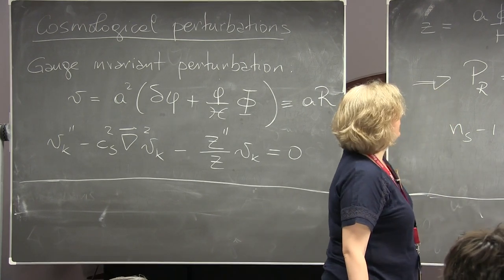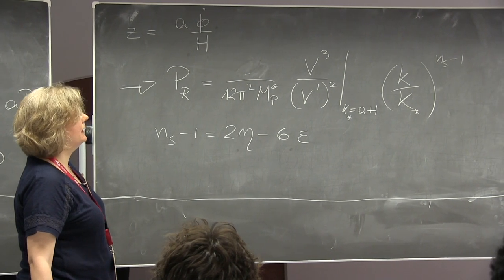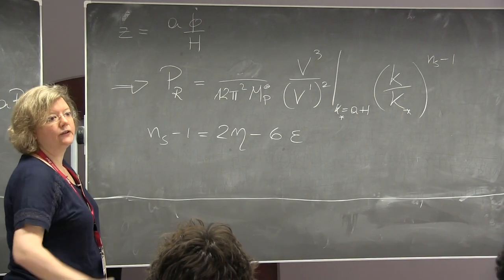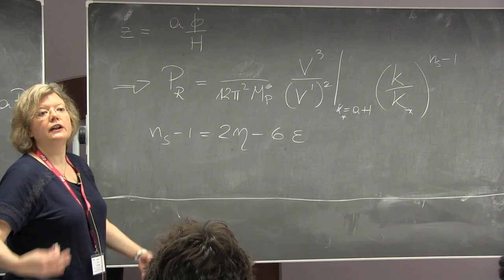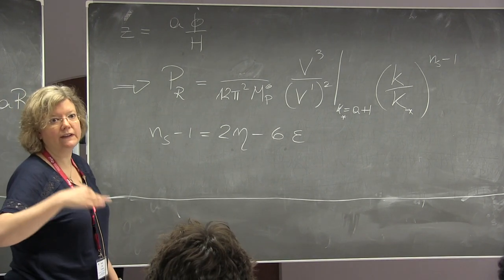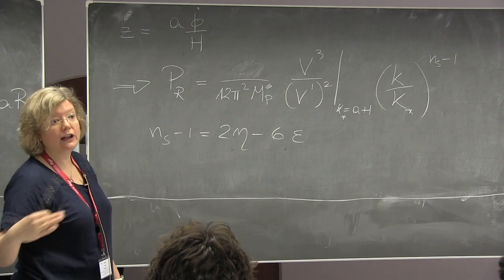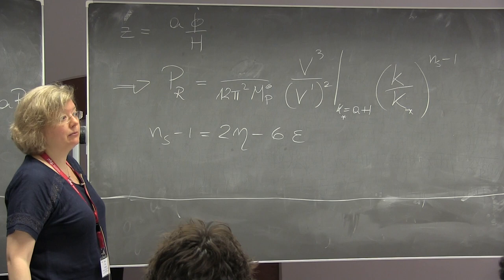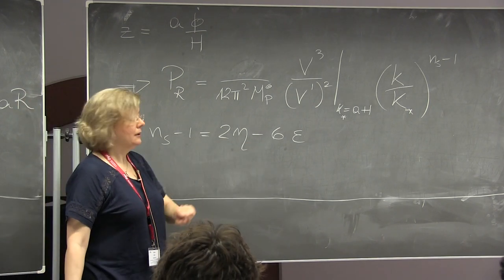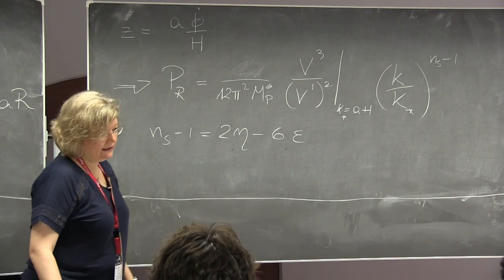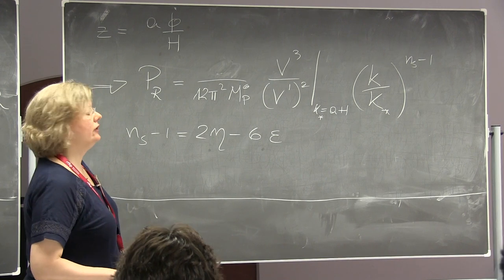You see immediately that you get a slight deviation from a perfectly scale-invariant spectrum due to the fact that inflation is not a pure de Sitter phase, it is a quasi de Sitter. There is a slight slope in the potential and a slight change of the Hubble parameter during inflation. The change is pretty small because n_s minus 1 has been measured by Planck — we will see the figure in a minute — and it is actually pretty small.